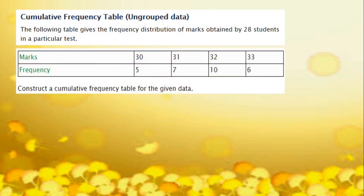A cumulative frequency table is given for the ungrouped data. The following table gives the frequency distribution of marks obtained by 28 students in a particular test. In the table, marks are given as 30, 31, 32 and 33, and the frequency corresponding to each mark is given as 5, 7, 10 and 6.